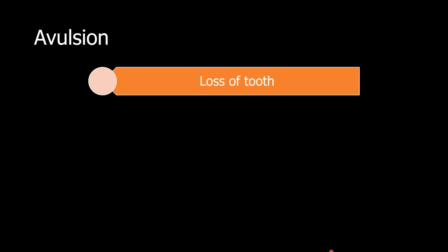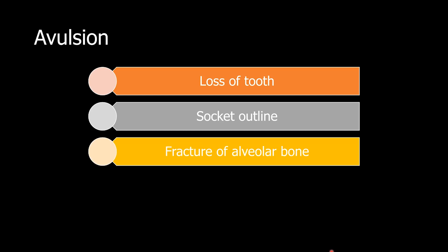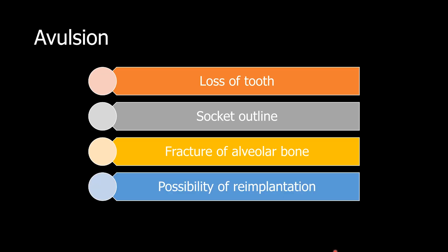Avulsion can give us the following radiographic signs: the tooth is lost and there would be a socket outline. You have to look for the intact socket outline and for any fracture of the alveolar bone. These features are evaluated for the possibility of re-implantation of the tooth. In our case, the patient had re-implanted the tooth himself with some kind of success.